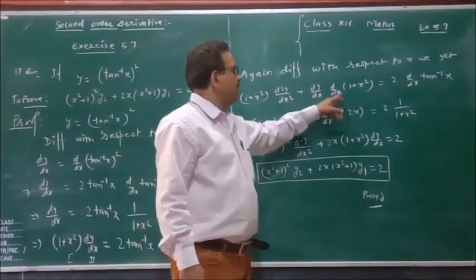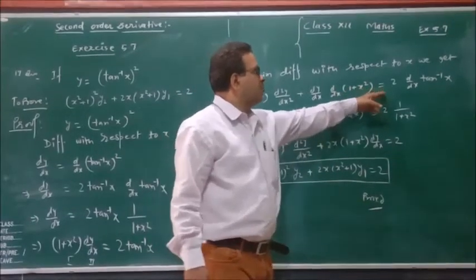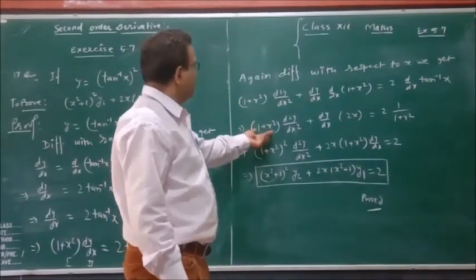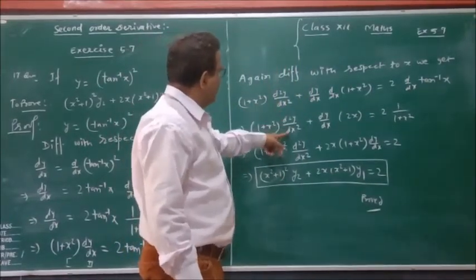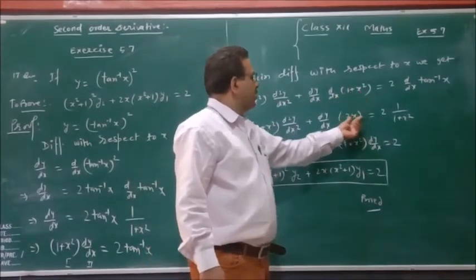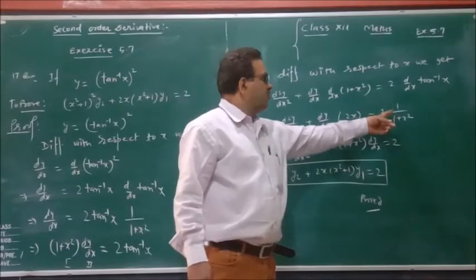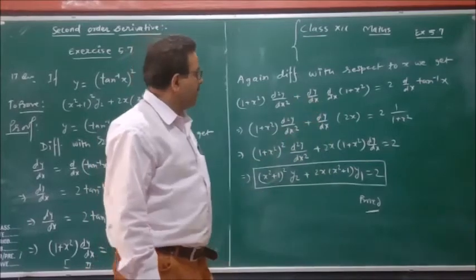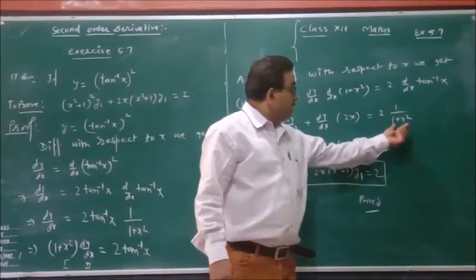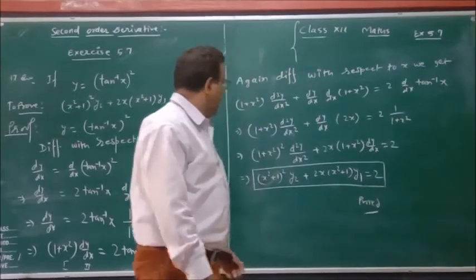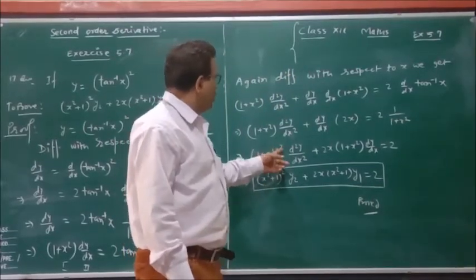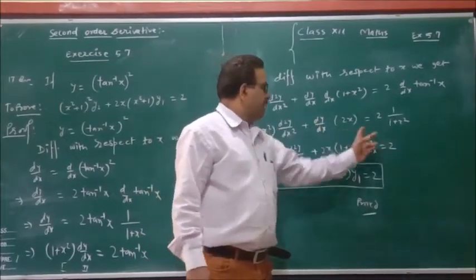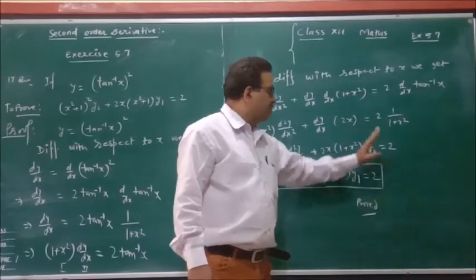Plus after the second function, we get 1 plus x squared times d squared y divided by dx squared plus 2x times dy divided by dx equal to 2 times d by dx of tan inverse x, which equals 2 divided by 1 plus x squared. Then multiplying both sides by 1 plus x squared, we get 1 plus x squared whole squared times d²y/dx² plus 2x times 1 plus x squared times dy/dx equal to 2.